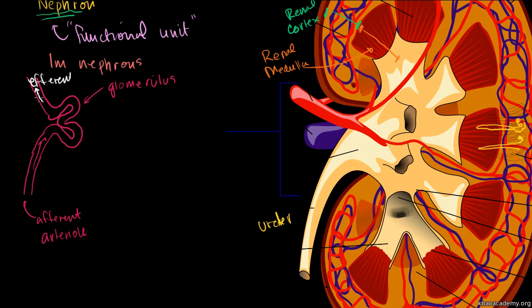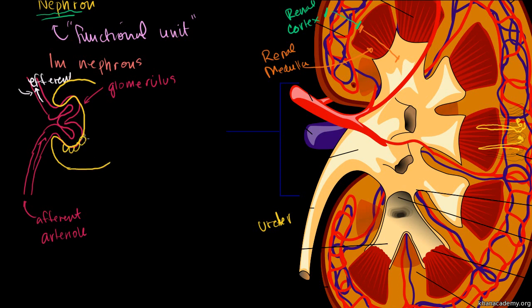Interestingly, we're still dealing with an artery at this point — it's still oxygenated blood. Normally when we leave a capillary system like the glomerulus we'd be in the venous system, but here we remain in the arterial system, probably because arterial systems have higher blood pressure. We need to squeeze fluid and dissolved substances out of the blood in the glomerulus, which is very porous and surrounded by other cells.